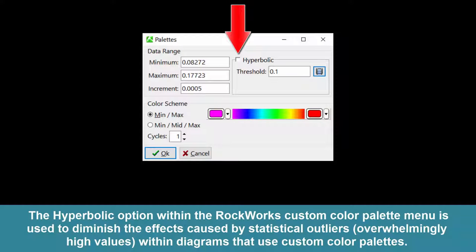The hyperbolic option within the RockWorks Custom Color Palette menu is used to diminish the effects caused by statistical outliers or overwhelmingly high values within diagrams that use custom color palettes.